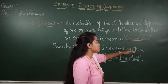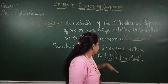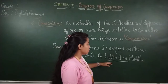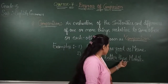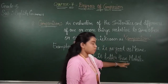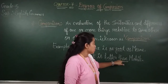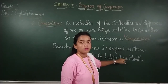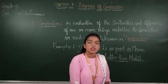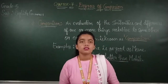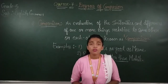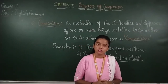So, Reena is as good as Neena. And for differences: Rohin is better than Mohin. Here the comparison word is used. Now we will know there are three types of degrees of comparison. We will know them one by one in detail.